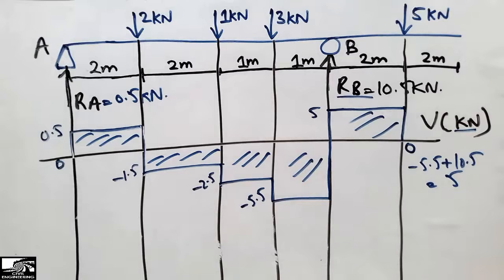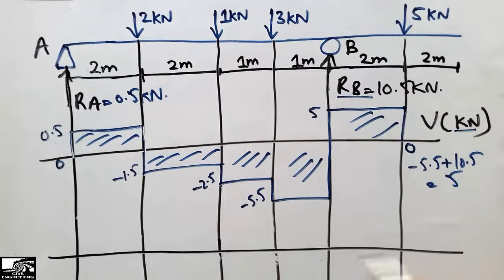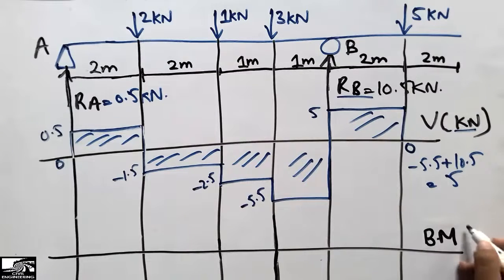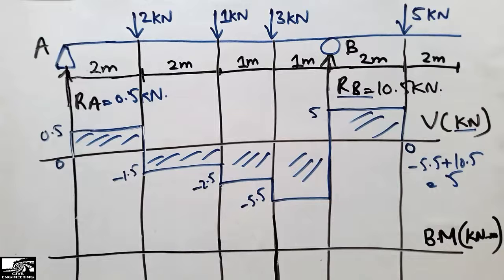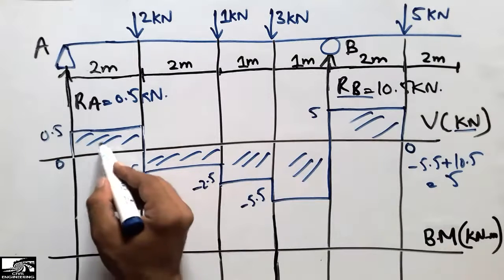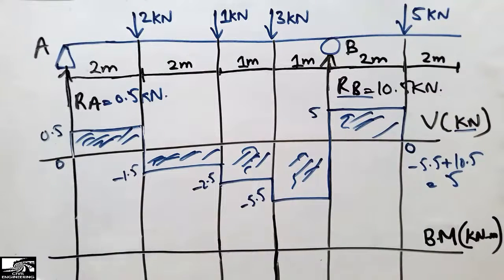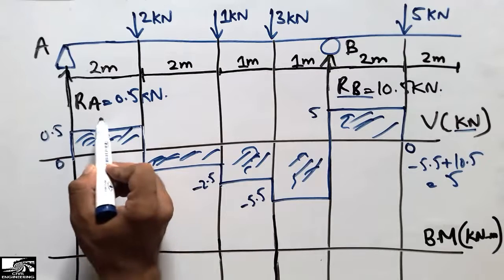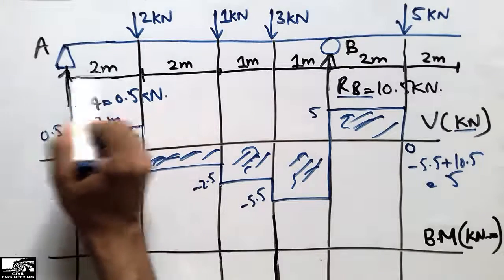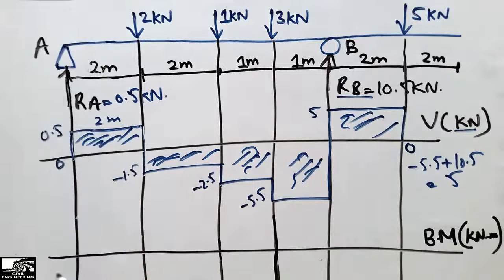For the bending moment diagram, we draw the reference line and note that the unit is kN·m. We find the bending moment by computing the area of each rectangular shape in the shear force diagram. The first rectangle has a height of 0.5 and width of 2 m, giving an area of 0.5 × 2 = 1 kN·m.